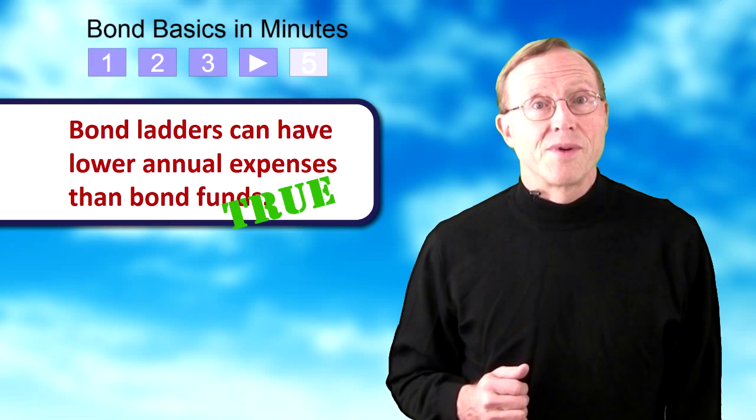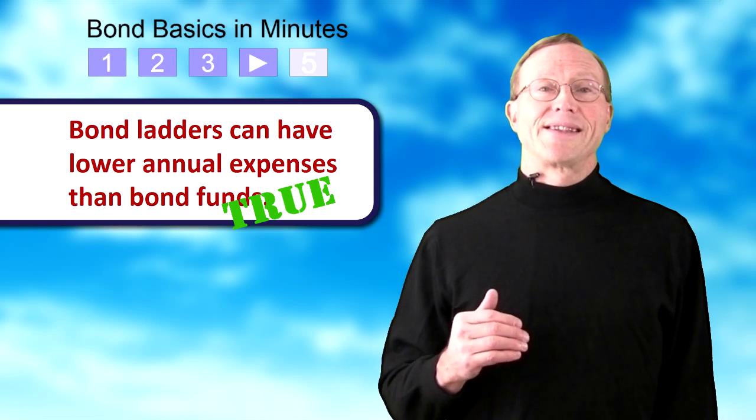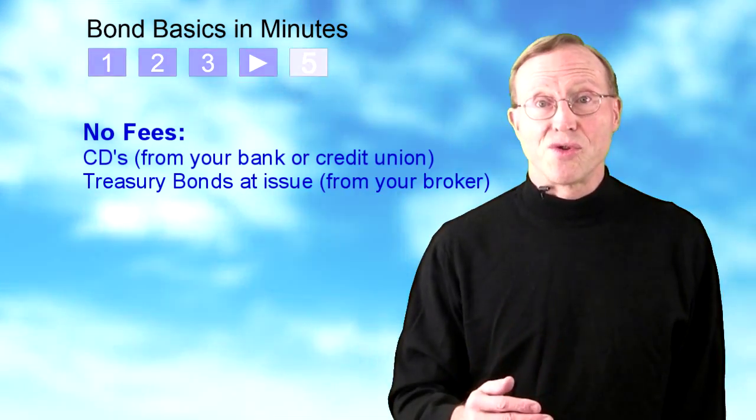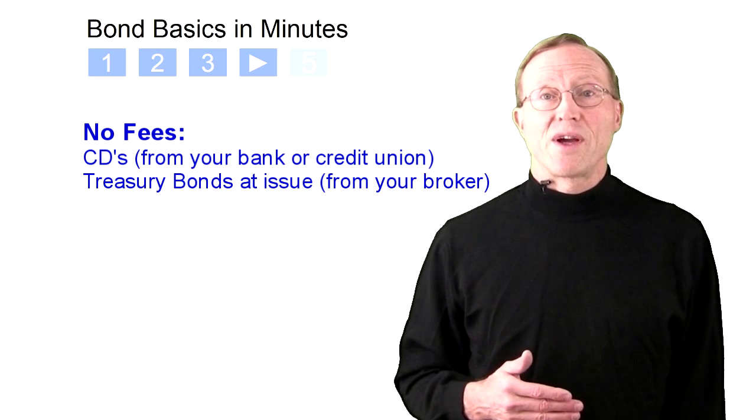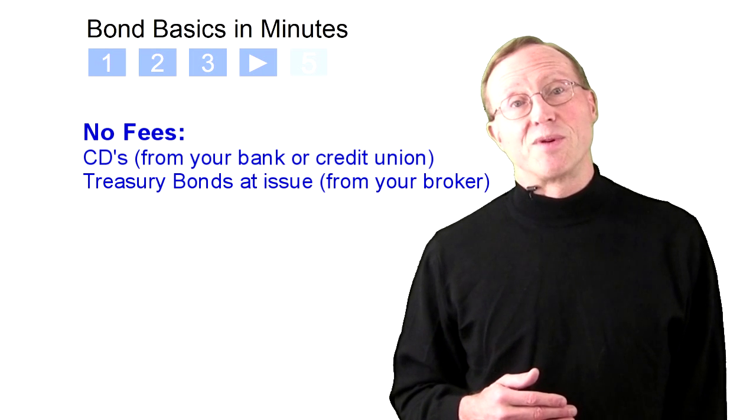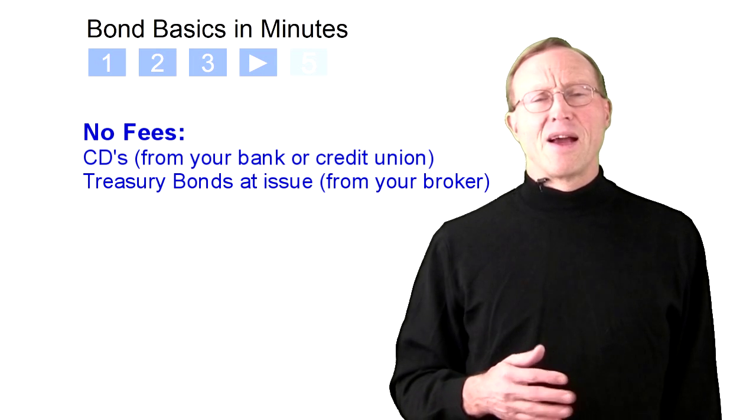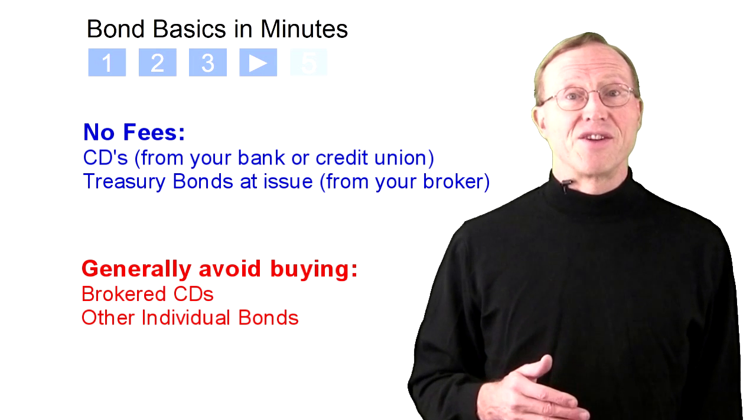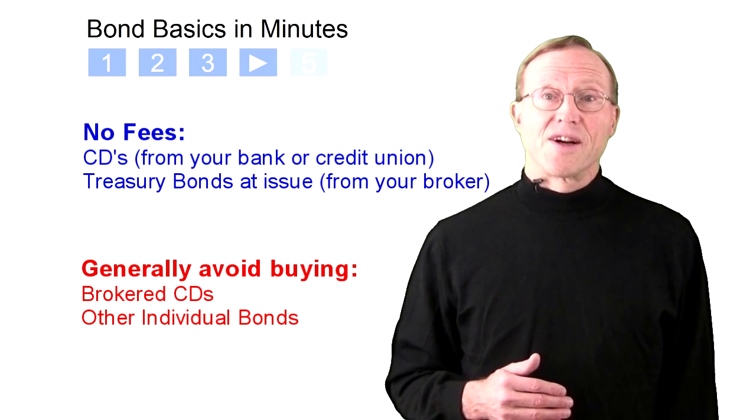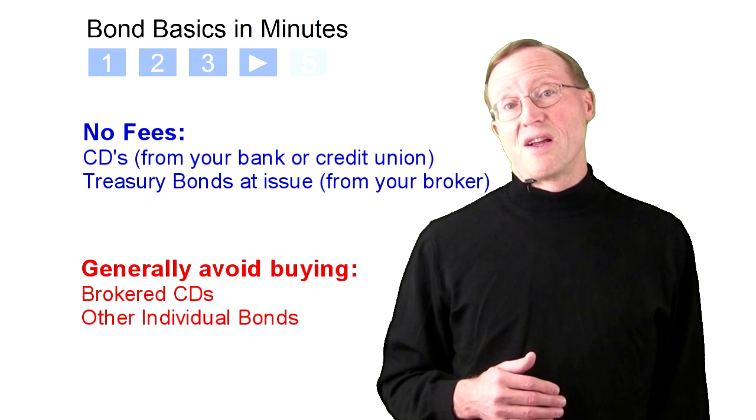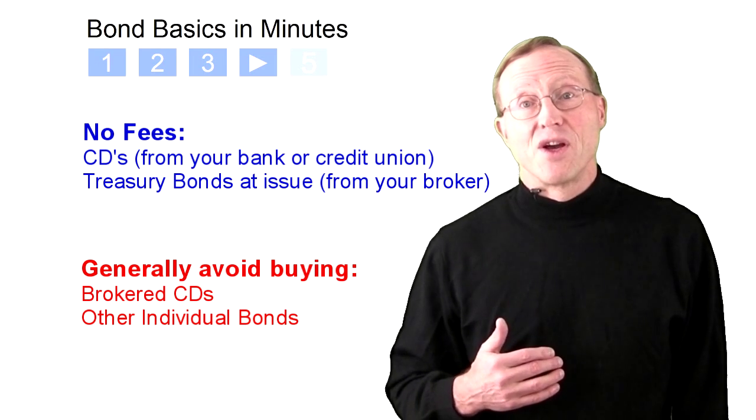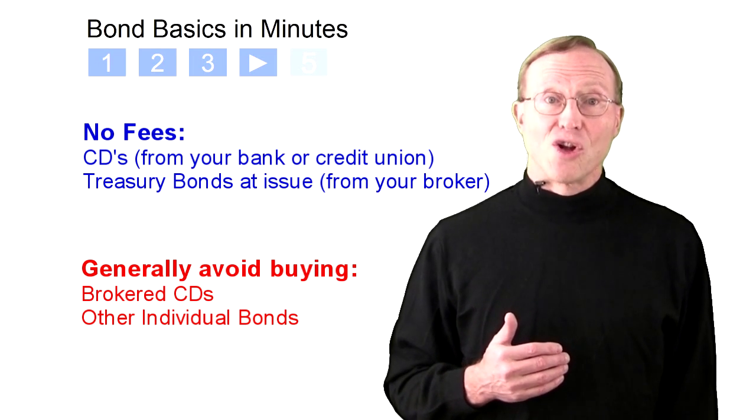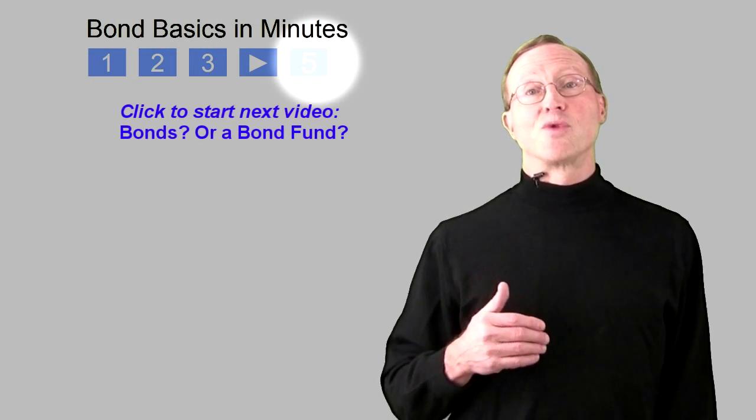This is true. It's usually possible to buy CDs or treasury bonds when issued without a fee. So a rolling bond ladder comprised of these would be a way to create a bond fund with the lowest possible annual expense. However, stay away from other types of individual bonds. They often come with hefty fees of a few percent that are unfortunately not visible to ordinary investors. You are usually better off buying a low-cost bond fund, and that's what we will talk about next.